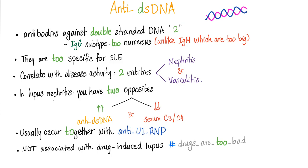Are you ready for the mnemonic? Here is the mnemonic. Anti-double-stranded DNA — everything here has to do with two. Here is a two. IgG subtype — IgG antibodies are too numerous. They are the most prevalent type of antibodies.